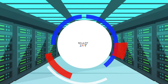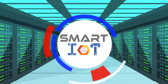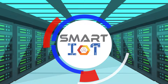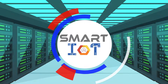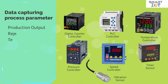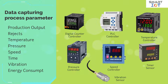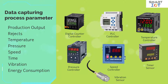Smart IoT is a proven solution which is specially designed to automate industrial process monitoring. It will capture process parameters such as production output, rejects, temperature, pressure, speed, time, vibration, energy consumption, etc. from the related device or sensor.